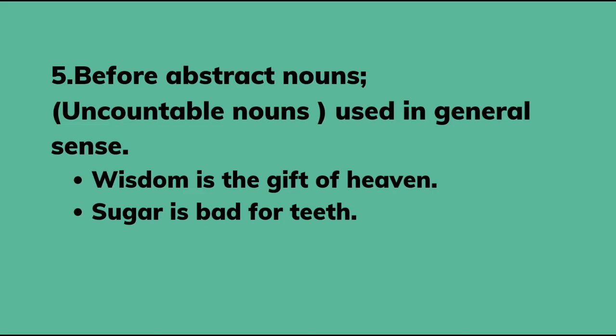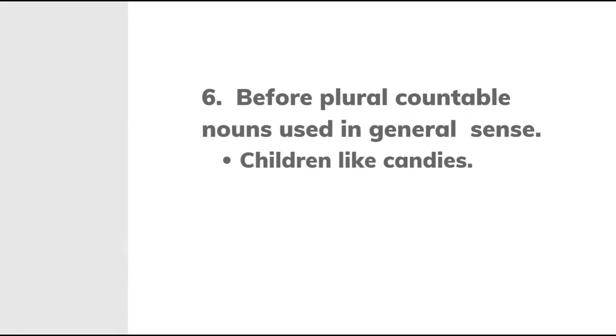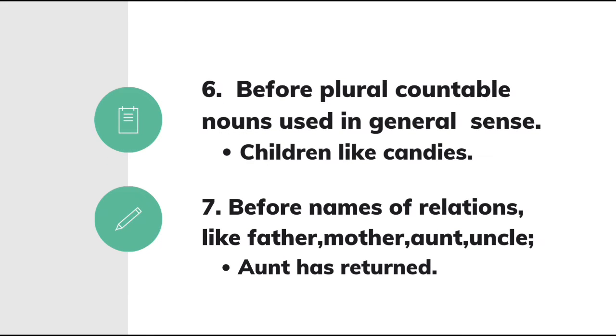Next is before abstract nouns and uncountable nouns when used in a general sense. For example: 'Wisdom is the gift of heaven,' 'Sugar is bad for teeth.' We will not use 'the' before abstract nouns. But if used in a particular sense, then we can put 'the' before the abstract noun.